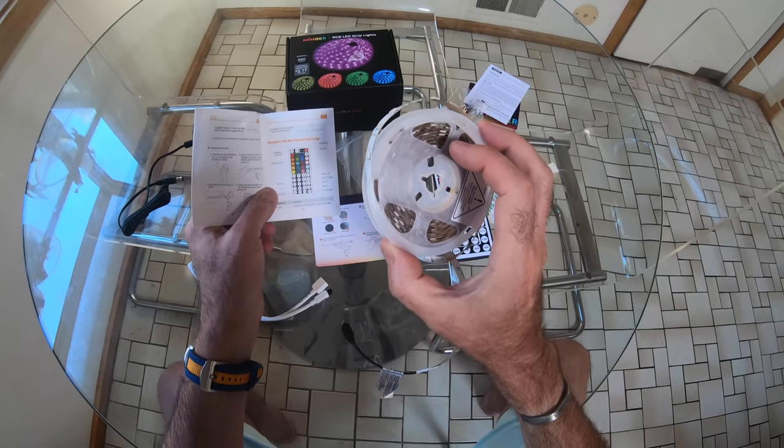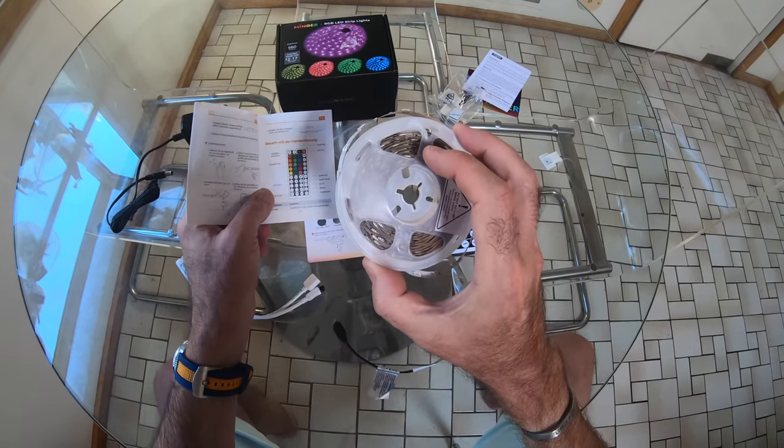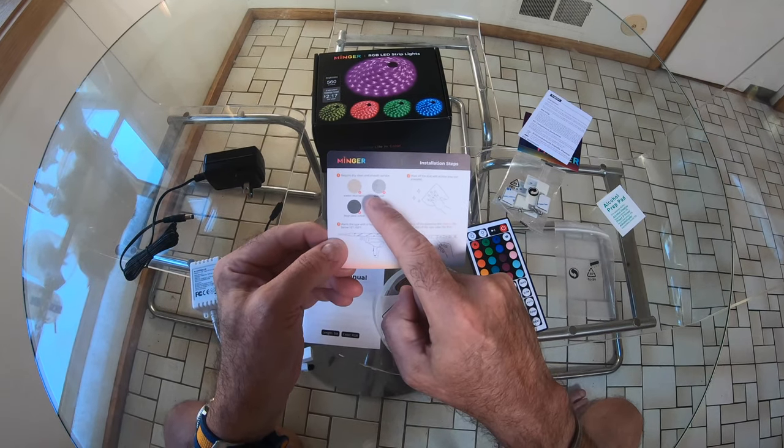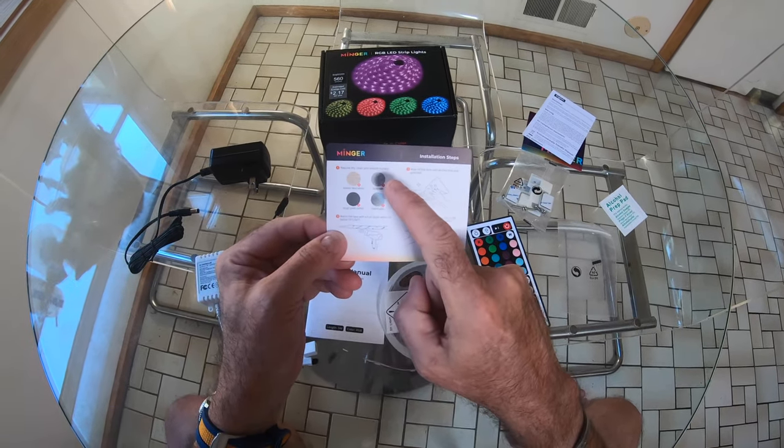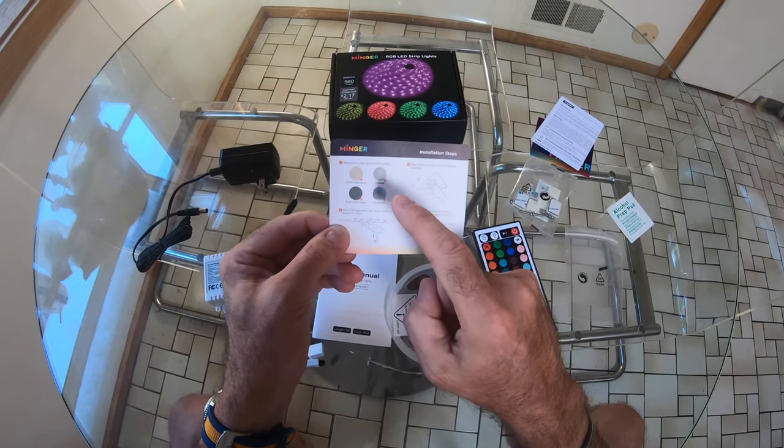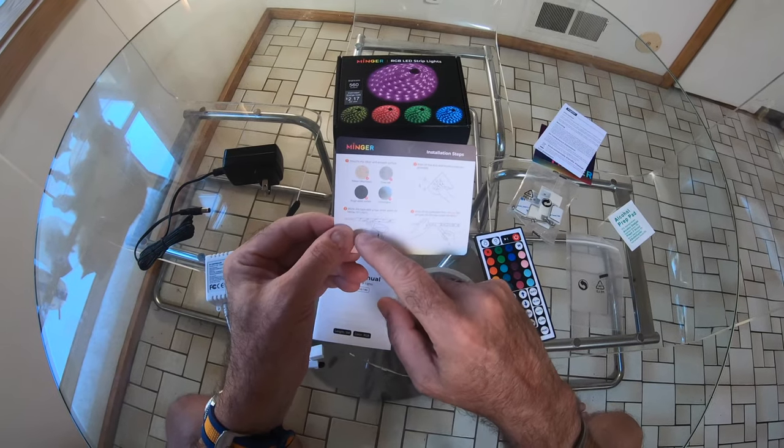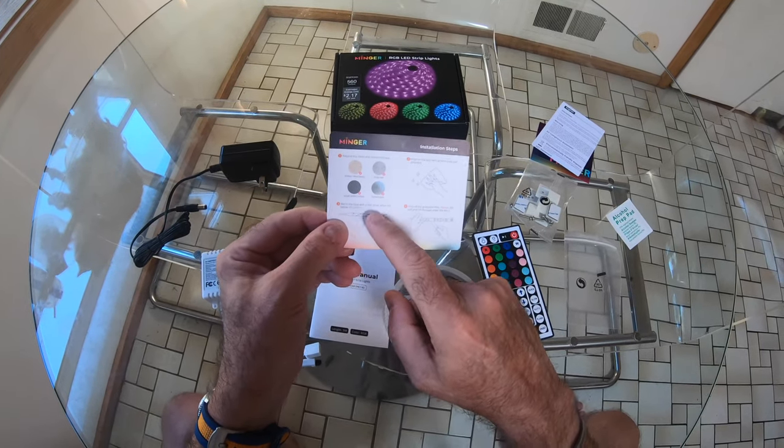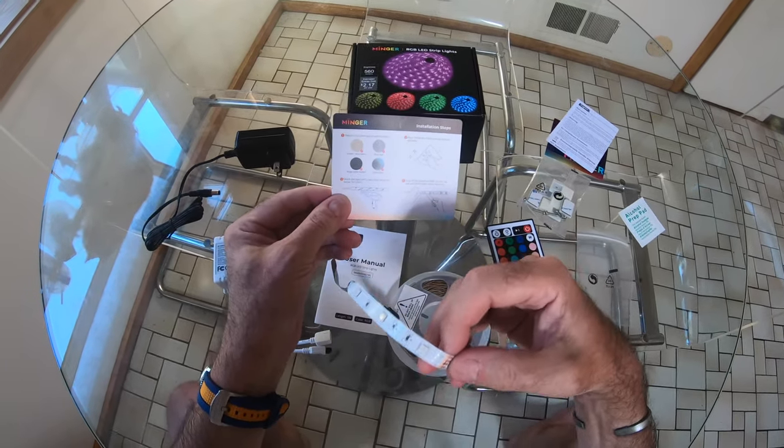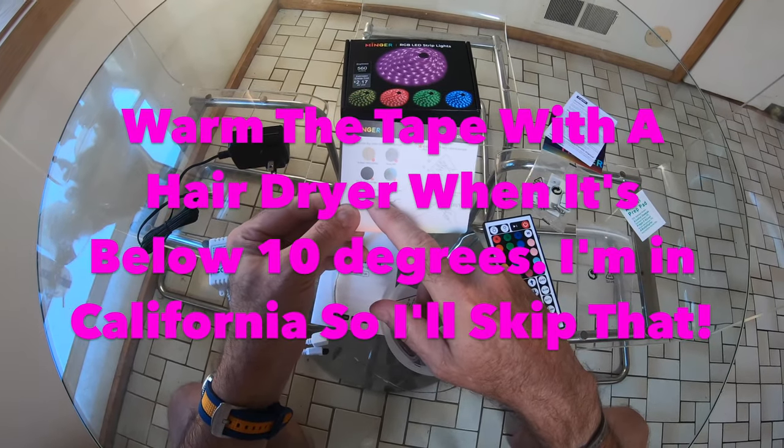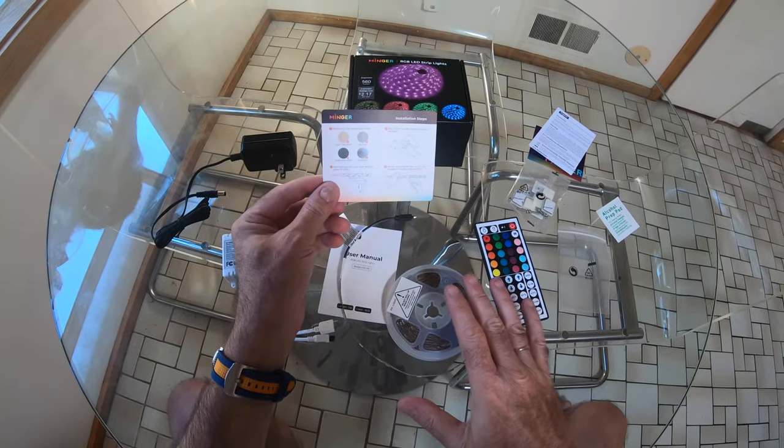What it says on the card is you need a dry, clear and smooth surface, so you're not going to be able to fit this to textured surfaces, dirty walls, or frosted glass. But I guess normal glass will be okay. It says warm the tape with a hairdryer when it's below 10 degrees centigrade or 50 degrees Fahrenheit.